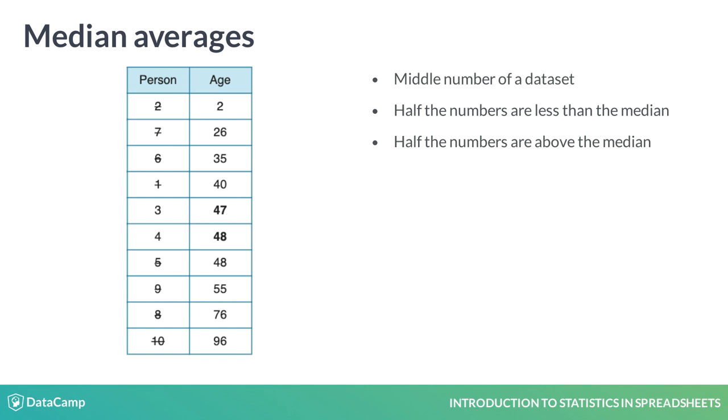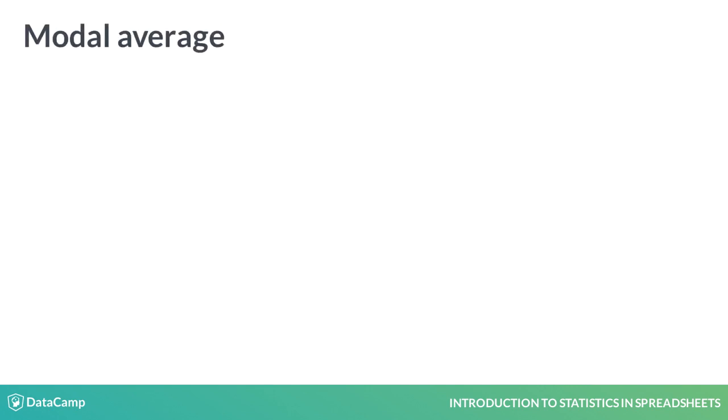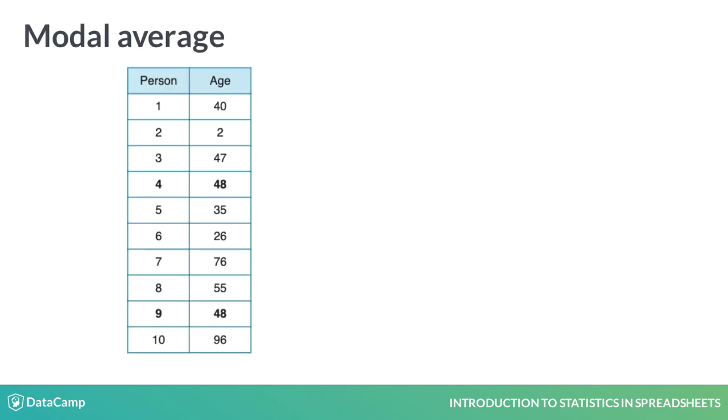The final statistic we'll cover here is the mode. The mode is a number that appears most often in the dataset. This Japanese age sample has 48 listed twice. Thus, the mode average is 48.